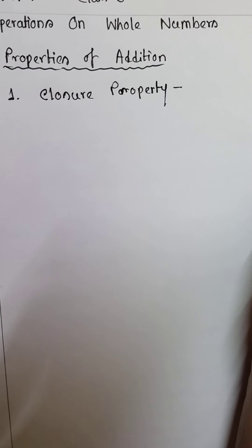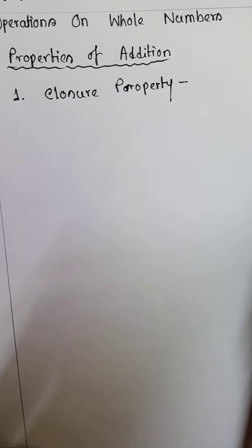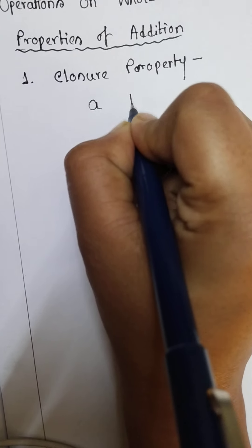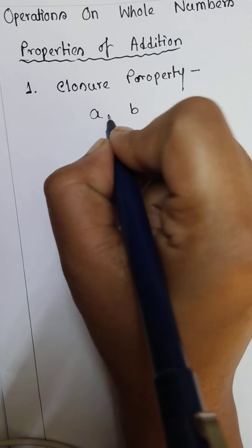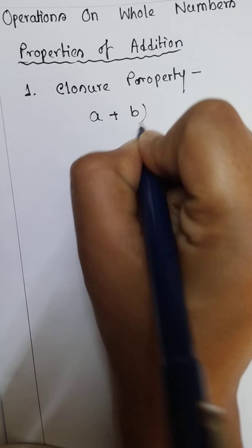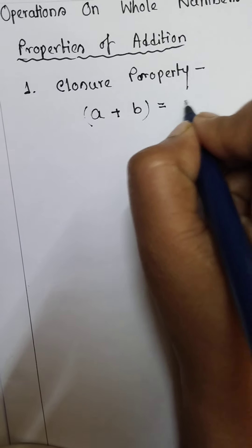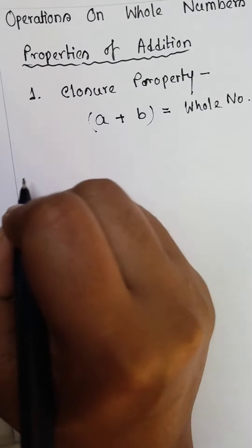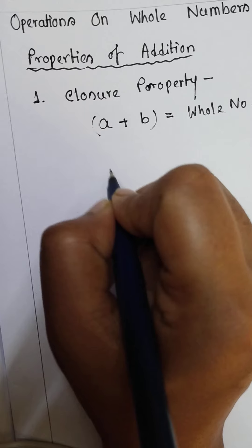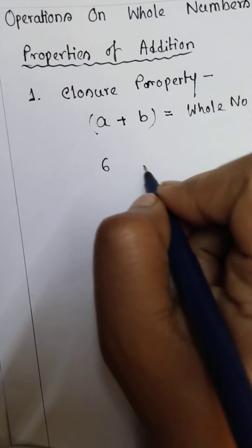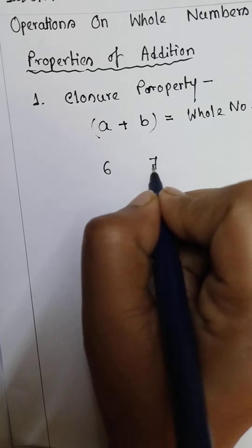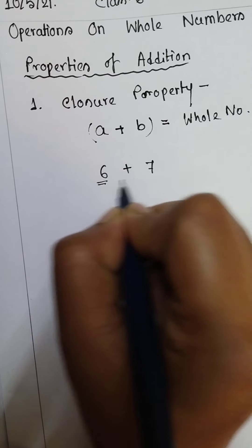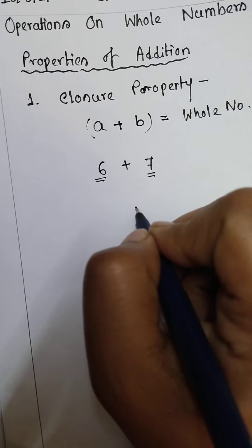If a and b are any two whole numbers, then a plus b will also be a whole number. Suppose 6 and 7, these two are whole numbers.